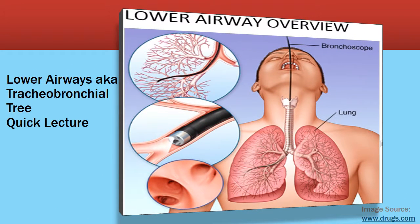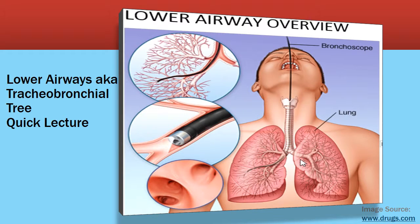Let's do a quick overview of the lower airways, also called the tracheal bronchial tree — and we can see why it would be called a tree. First, we have the trachea, or windpipe. It has branches at the carina, where it branches off, and has six to ten C-shaped rings of cartilage that keep it rigid and keep it from collapsing. Then we have the two main stem bronchi. The right one is slightly wider and slightly more vertical than the left. The significance of this is that a patient is more likely to aspirate into the right lung, and when intubating, the scope usually ends up on the right side.